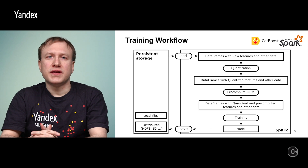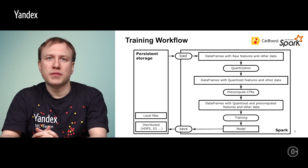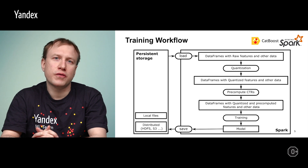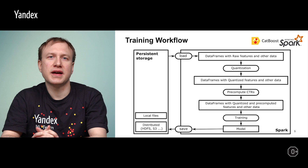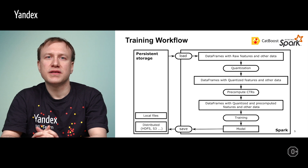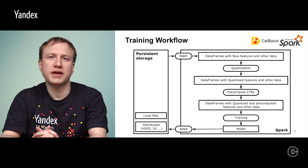Here we will look at the training part of the generic workflow as implemented in CatBoost Spark. First, data is loaded into Spark data frames from persistent storage, like local files or more often distributed storage like HDFS, S3, etc. These data frames should at least contain a column with features and either a label column or an attached data frame with query pairs data. Then the quantization process is performed and numeric feature data is compressed into bins, typically 8-bit each.